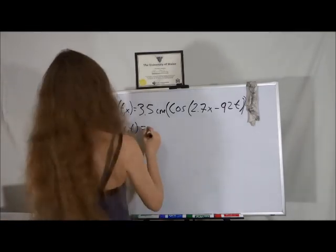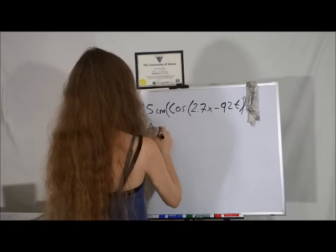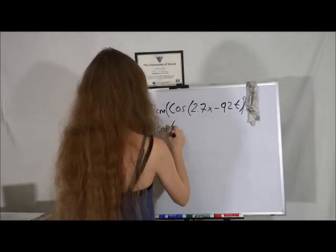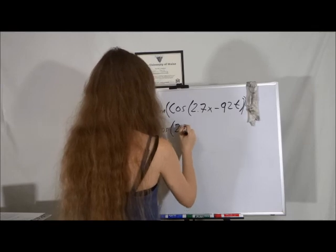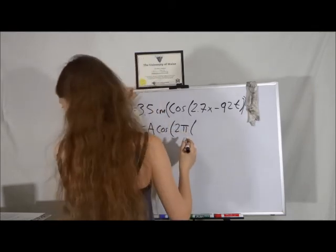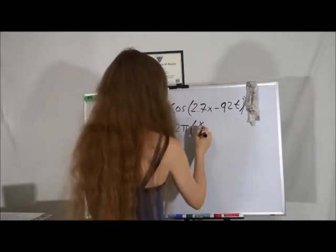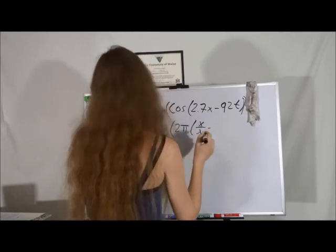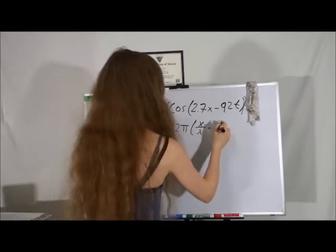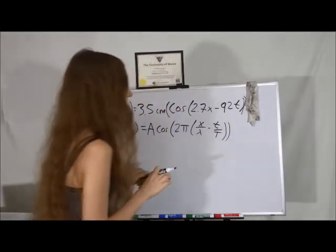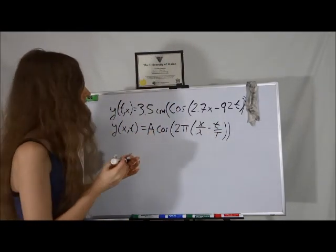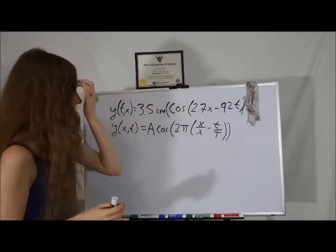And this is equal to a cosine of 2 pi times x over lambda minus t over T. And this one is for a wave that's moving to the right or in the positive direction, so the same scenario as what we have here.